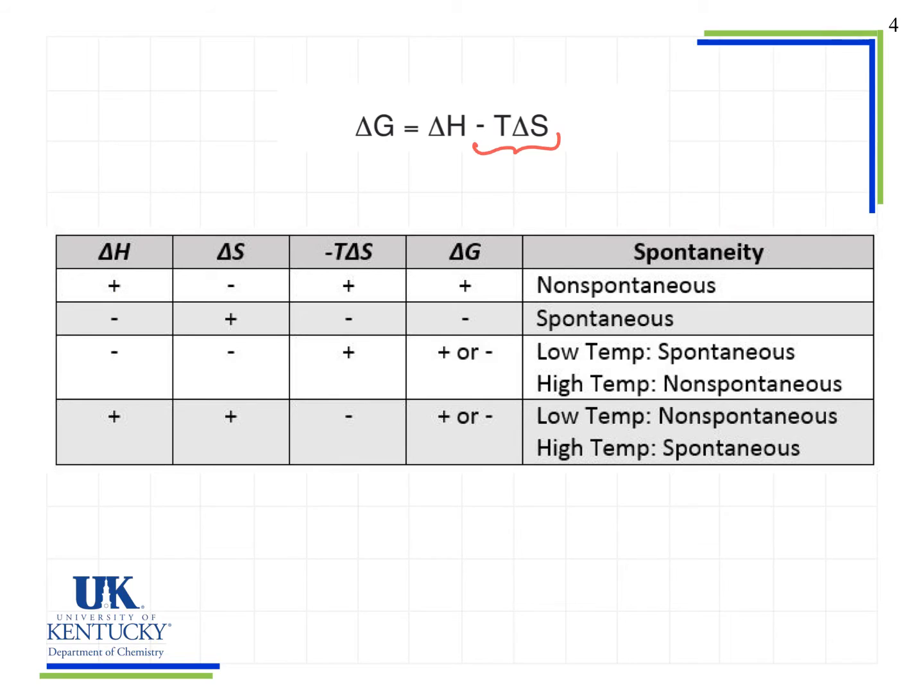So we have a delta H term that's positive, and we have a minus T delta S term that is positive, therefore the delta G value will also be positive. And if delta G is positive, then we know we have a non-spontaneous reaction.